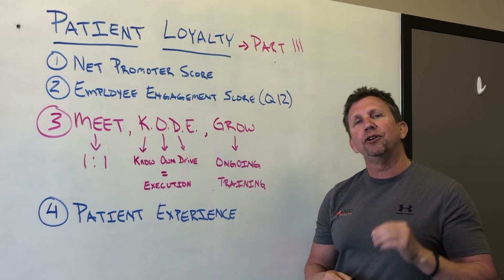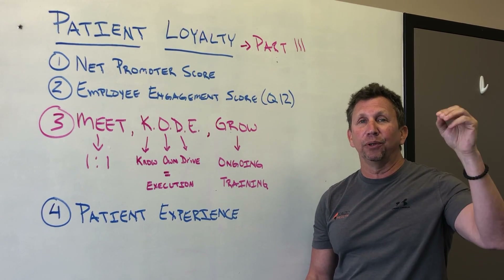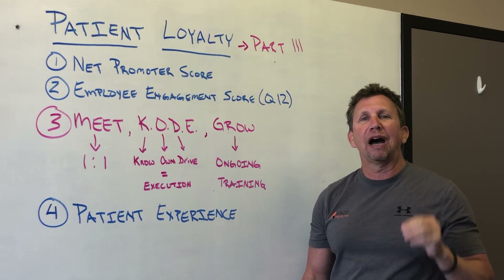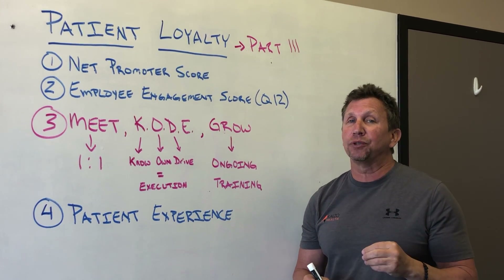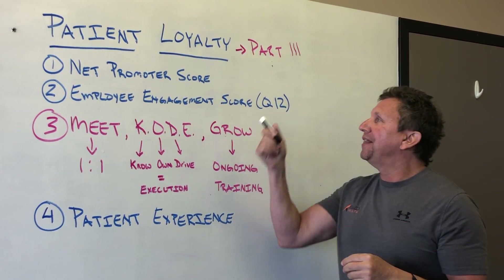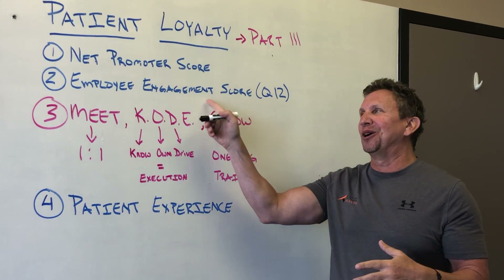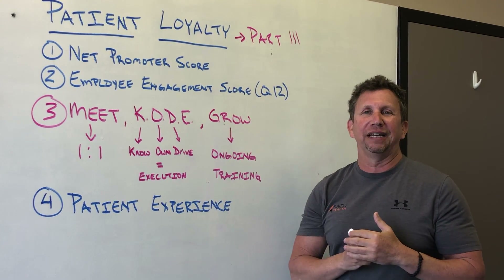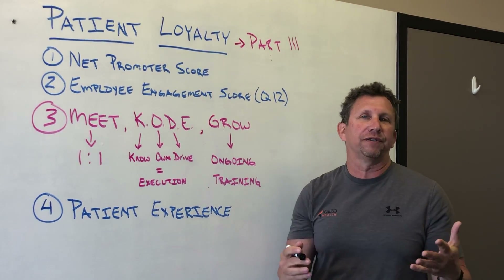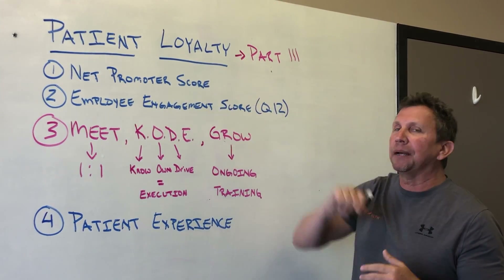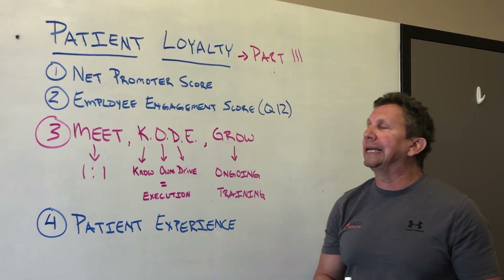We also know from science that highly engaged employees drive up loyalty scores. So if you don't know what your employee engagement score is, make sure that you do the Q12. If you don't remember what that is, go back and watch that video. Now we're talking about part three — what do you do with all this information? You've got your baseline patient loyalty score and your baseline employee engagement score.